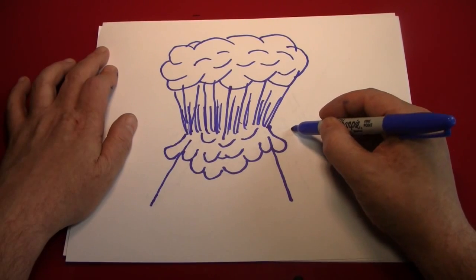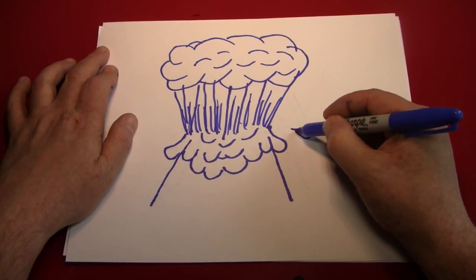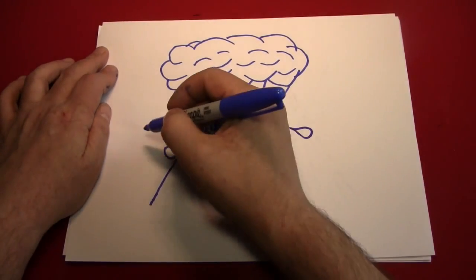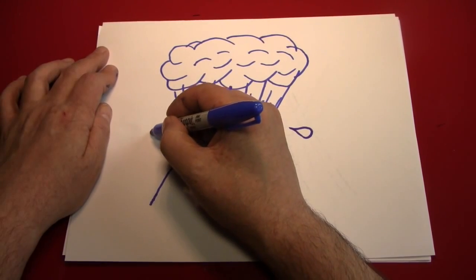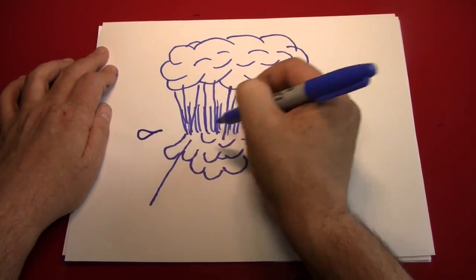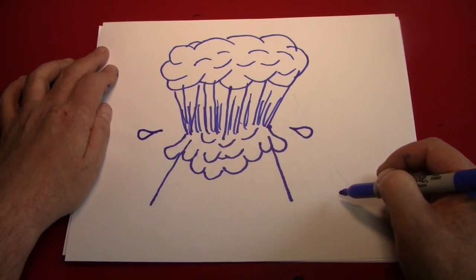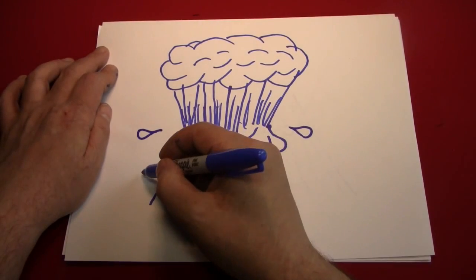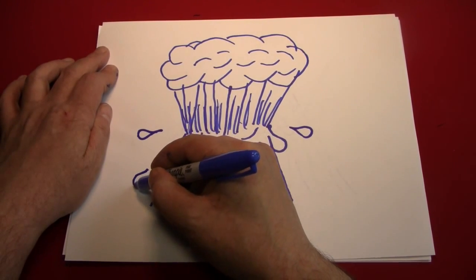Next we're going to have some lava shooting off the edges of the volcano. And that can be represented with little teardrop shapes. And just remember, the point of the teardrop should probably point towards its source. And that would be the volcano.